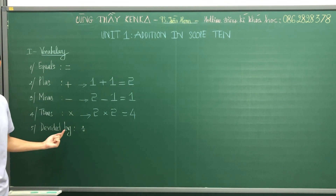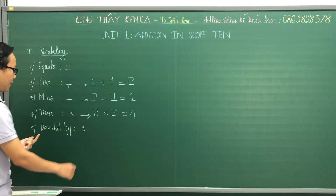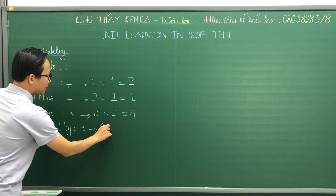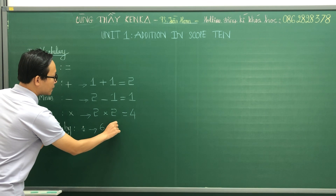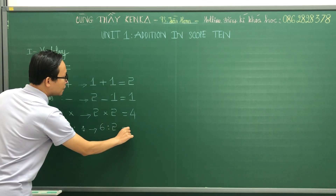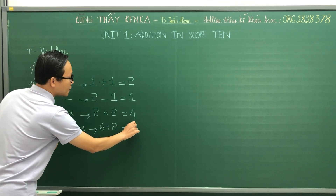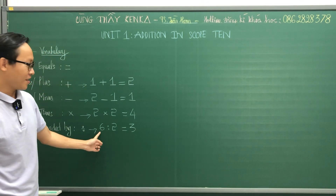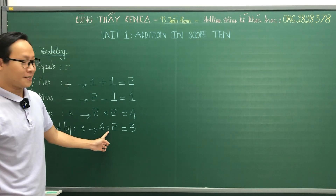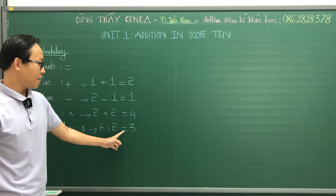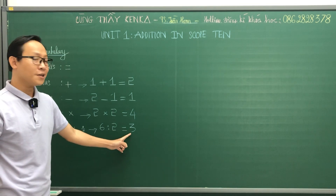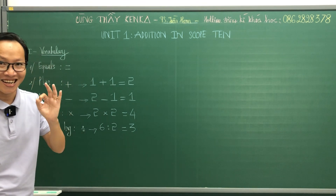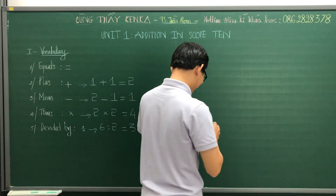Divided by, divided by, divided by. For example, six divided by two equals three. Six divided by two equals three. Okay, good job.